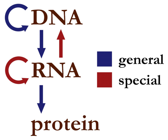The dogma classes these into three groups of three: three general transfers believed to occur normally in most cells, three special transfers known to occur but only under specific conditions in the case of some viruses or in a laboratory, and three unknown transfers believed never to occur.